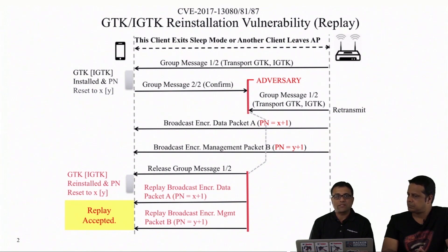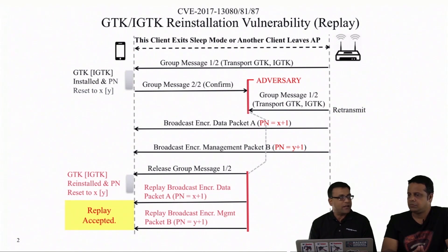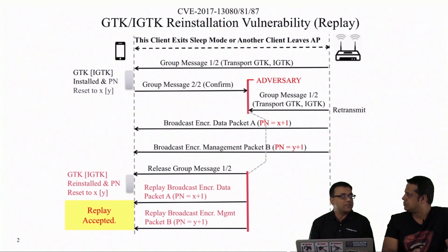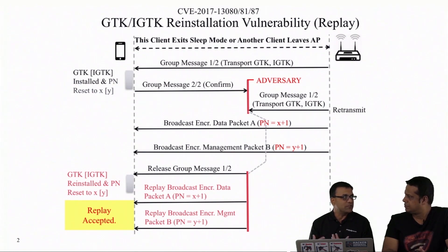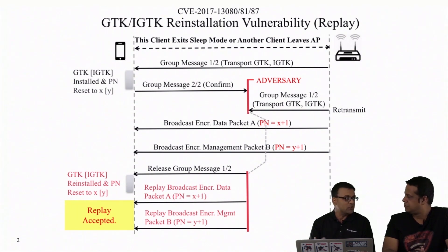These GTK and IGTK may need to be distributed to clients beyond when the ePol four-way handshake happens. A typical use case is when the client goes into sleep mode while connected to the AP and then comes back up after a few minutes. The GTK and IGTK could have changed on the access point, since it's the access point's control to generate and distribute them. When the client comes back up, it needs to ask for those again from the access point.